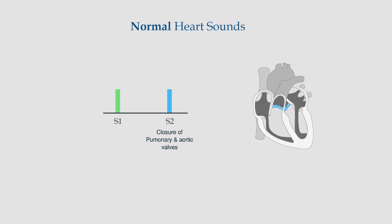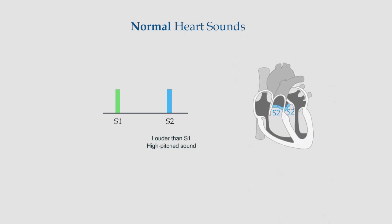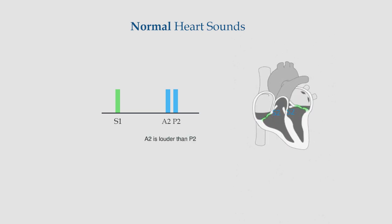The second heart sound is caused by the closure of the pulmonary and aortic valves at the end of ventricular systole. It is best heard at the left sternal edge. S2 is louder and higher pitched than S1. The sounds of the closure of aortic and pulmonary valves can be heard separately in S2. The aortic component precedes the pulmonary component, written as A2P2. The aortic component is normally louder than the pulmonary component.